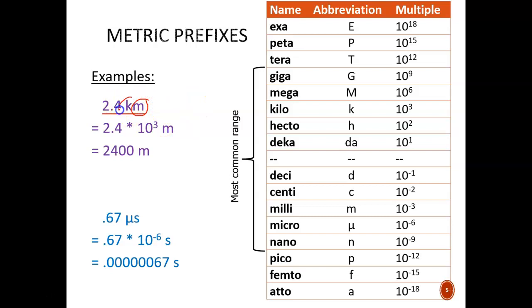The prefix is k for kilo, which means 10 to the third power, or 1,000. So, all together, this means 2.4 thousand meters. Let's look at this next similar example.